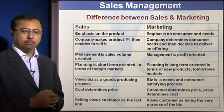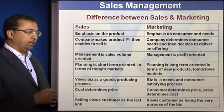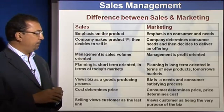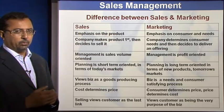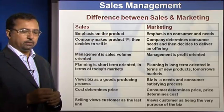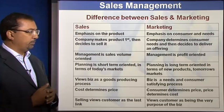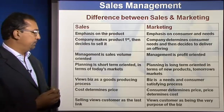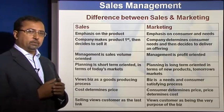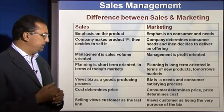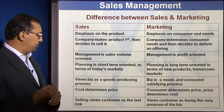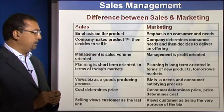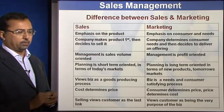In the case of sales, planning is more short-term oriented — in terms of today's markets and today's context. In marketing, planning is more long-term oriented, not just in terms of today but also in terms of newer products and emerging markets. In sales, business is seen as a goods-producing process, whereas in marketing, business is essentially seen as a needs and consumer satisfying process.